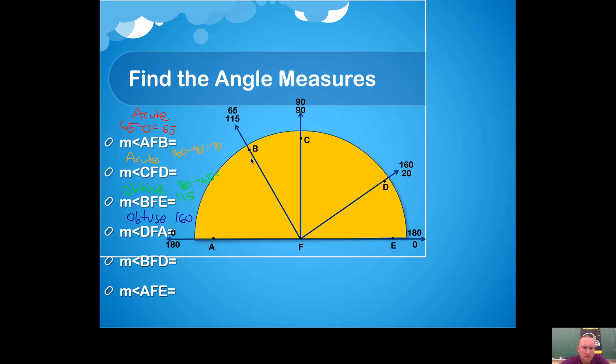Next one: measure of angle BFD—that's this guy right here. It's probably pretty tough to classify right now. It kind of looks like a right angle, but we're not positive that it is. Let's subtract some numbers: 115 minus 20. That gives you 95. So this angle is actually a little bit bigger than a right angle. This is an obtuse angle. You can't tell that before you find its measure just because it looks like a right angle.